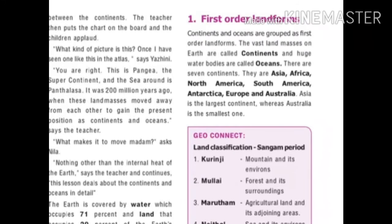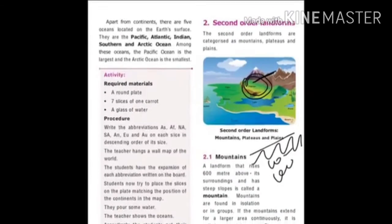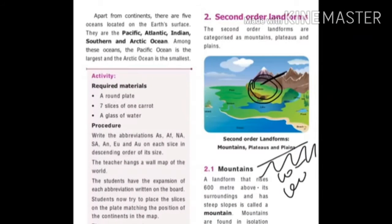In the first order landforms, the vast landmasses on the earth are called continents and the huge water bodies are called oceans. There are seven continents: Asia, Africa, North America, South America, Antarctica, Europe and Australia. Asia is the largest continent and Australia is the smallest.